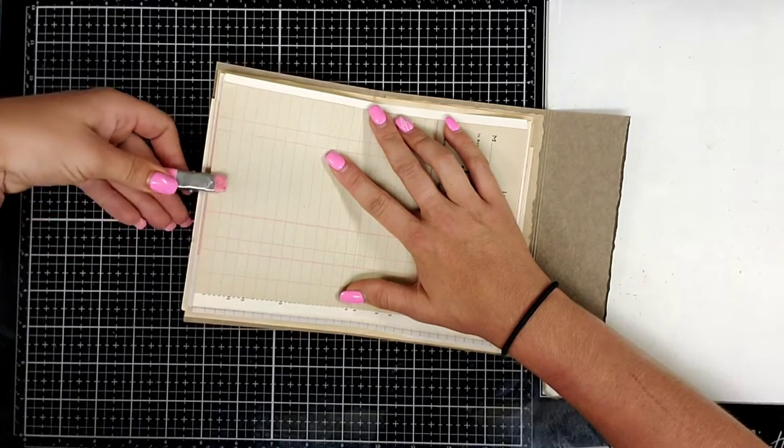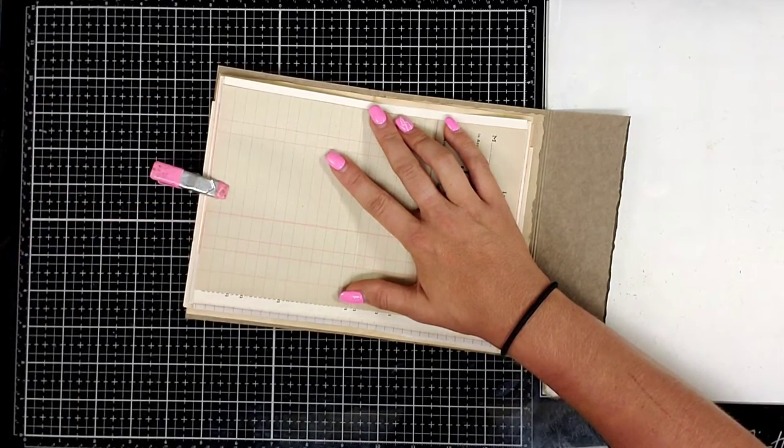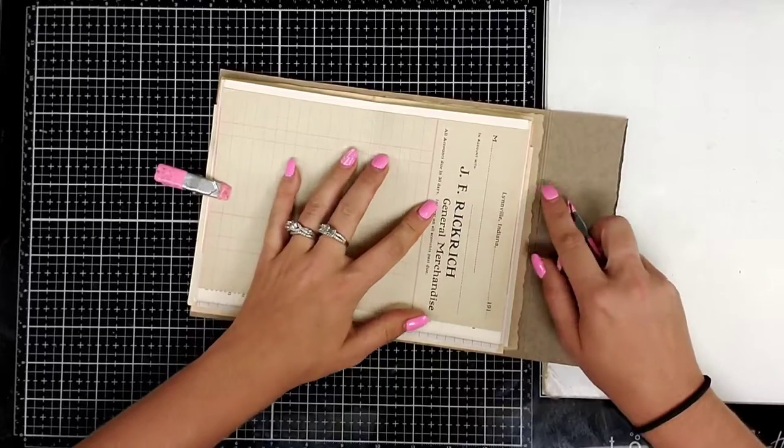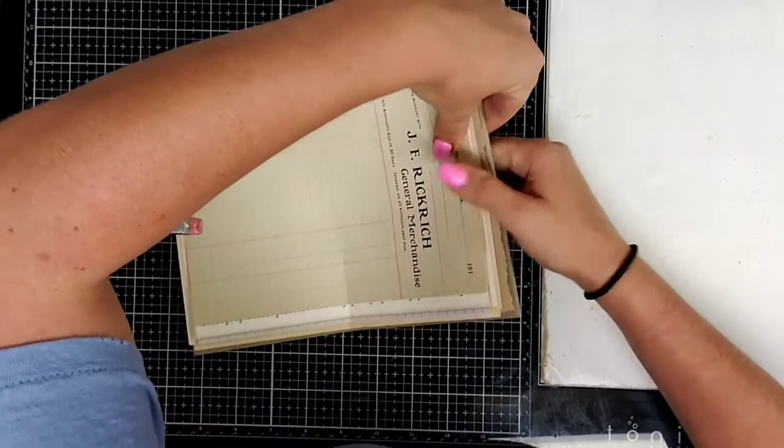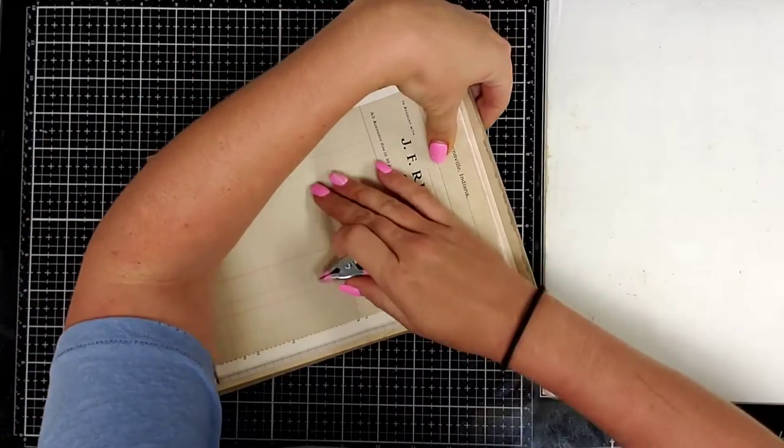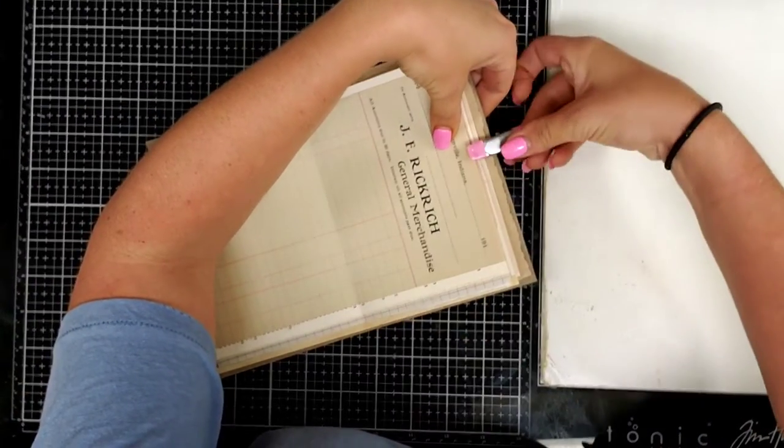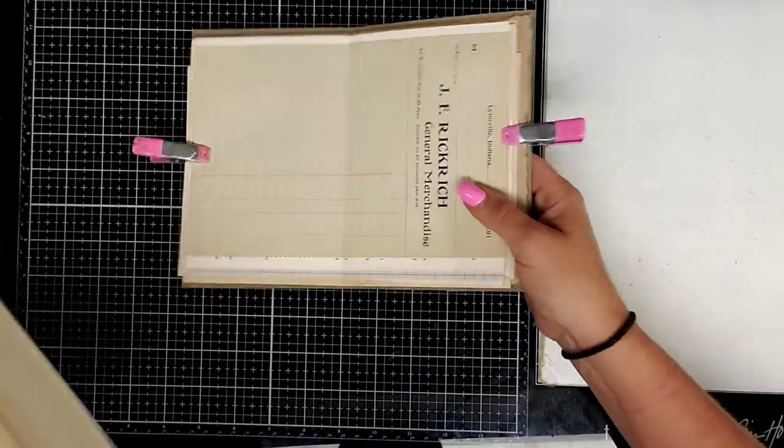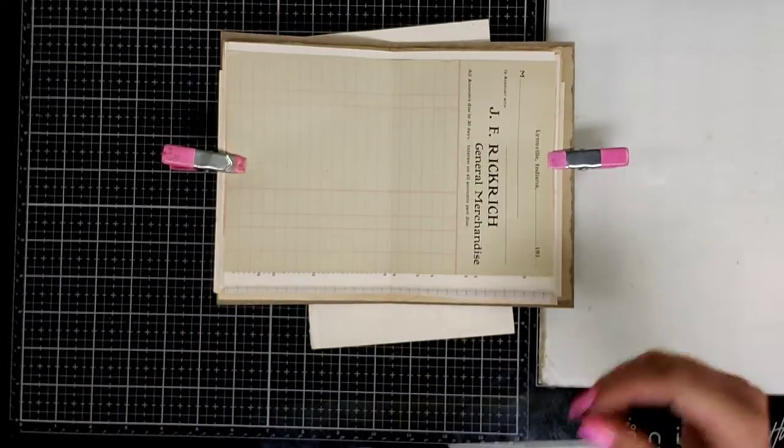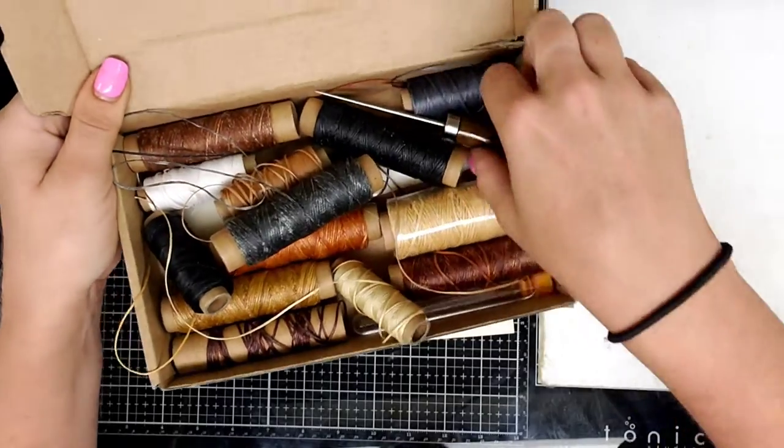I just use these clips from the Dollar Tree and I clip it and I'm not going to be able to clip it on this side unless I fold that back. We'll make that work and then you're going to need a binding kit.